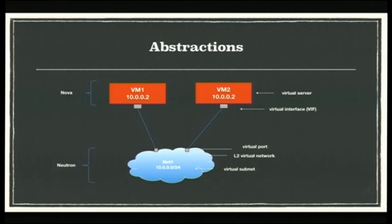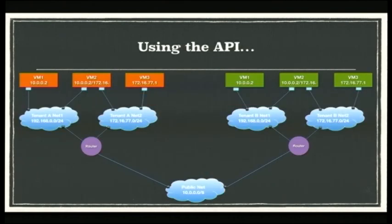In a very simple example, Neutron is responsible for the networks, subnets, and ports — those are three key entities. Nova is responsible largely for the VM and ensuring the VIFs are created. Using the API, we can create a rich set of topologies with routing, NAT, and different tenant networks. Notice that tenant A and tenant B can have overlapping IP address ranges. With virtual networking, this enables you to build complete dev environments that replicate production environments, and in high multi-tenancy you don't have to worry about ensuring IP ranges don't overlap.